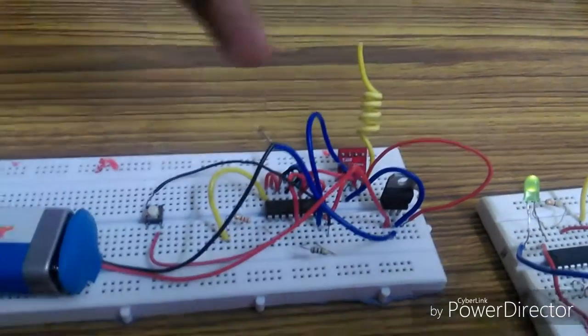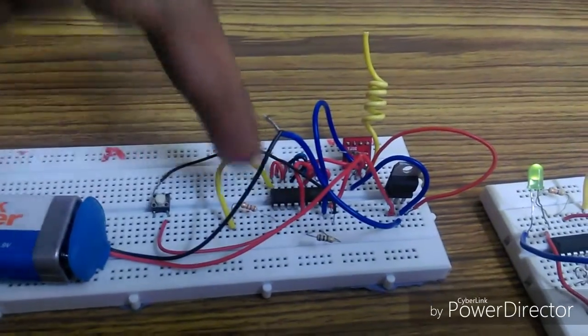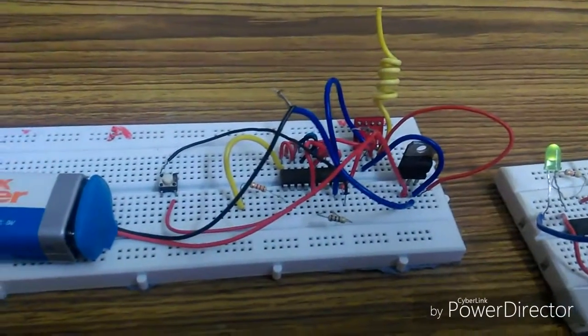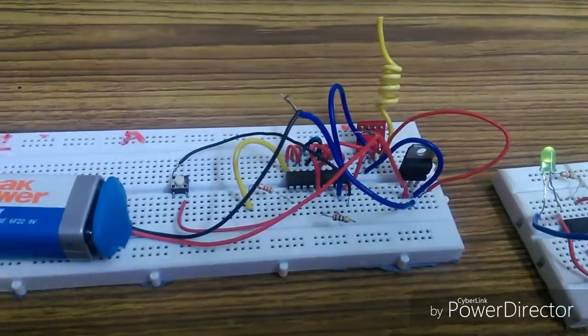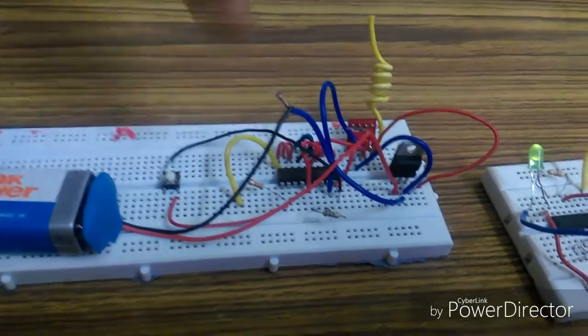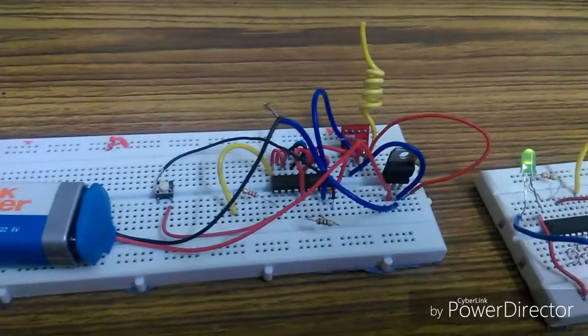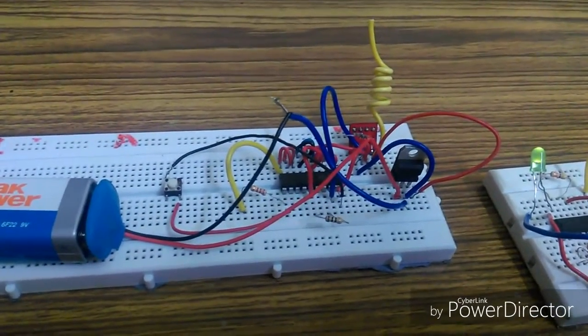This one is the encoder IC that converts parallel data into serial data. In my previous video I showed that if we don't use the encoder IC, then we can transmit only one bit of data.